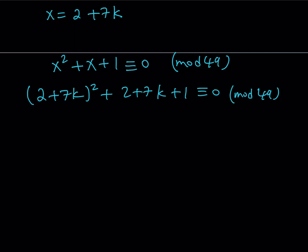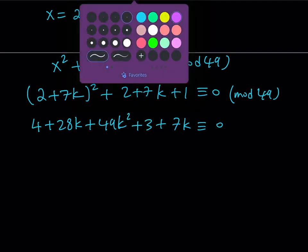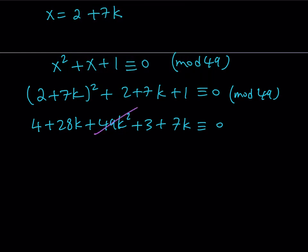So let's go ahead and square this expression: 4 + 28k + 49k² + 2 + 1, which is 3. So I can just write it as 3 + 7k, and this is supposed to be congruent to 0 (mod 49). Let me not write the 49 every time because you already know what it is. Now notice this, we have 49k².